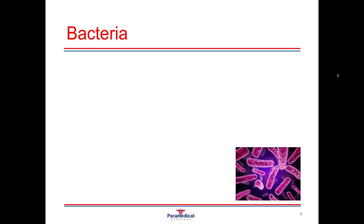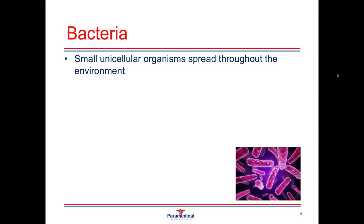Bacteria are the first pathogenic agent we're going to have a look at, and you can see there's a picture of what bacteria look like underneath a microscope down in the right-hand corner. From the picture you can see that they're quite simple in structure and they're only one cell large — what they call unicellular organisms — and they are spread right throughout our environments. They have the ability of living independently of other organisms, which means bacteria do not need a human or animal host to survive. They're quite happy to survive and breed on any kind of object, such as a desk, the shower floor, a mobile phone, or money.